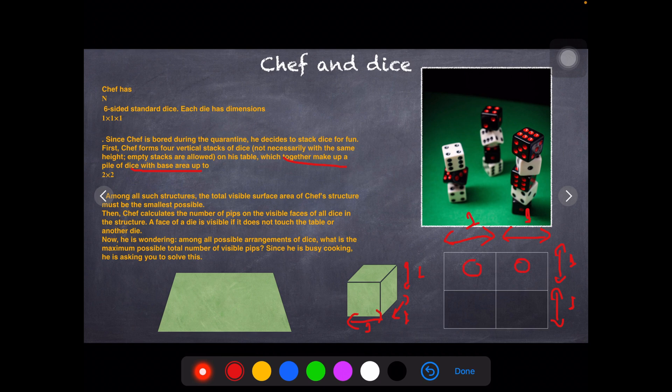Among all the structures, the total visible surface area of the chef's structure must be the smallest possible. Here is where the crux of the question lies. The surface area of a cube is 6a squared, but the total visible area is how much of the die can you see.